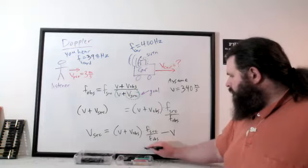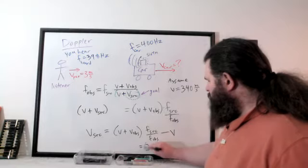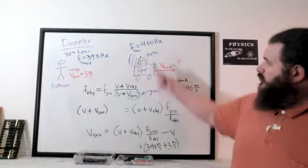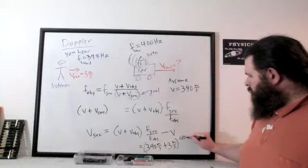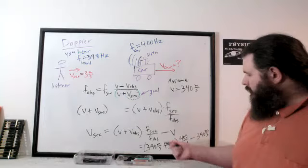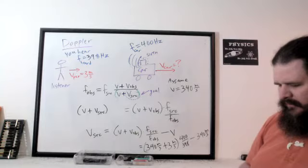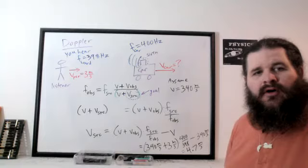Filling in the values: (340 + 3) m/s times the ratio (400/398), then minus 340 m/s. The hertz units cancel. Running the numbers — 343 times 400/398 minus 340 — gives about 4.7 meters per second. That's how fast the car would have to be moving to produce exactly this observed frequency shift.